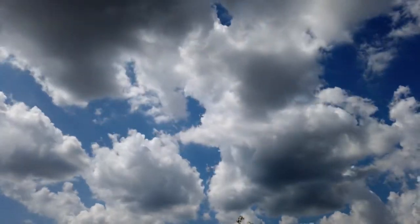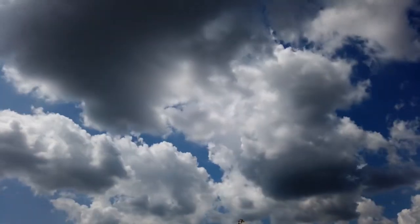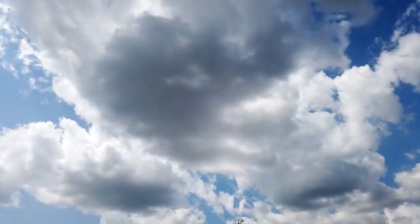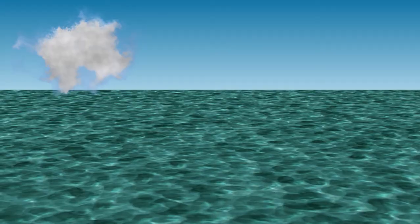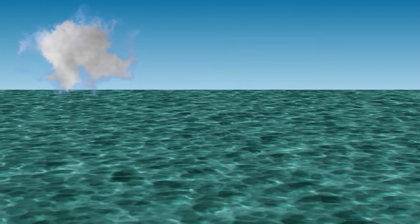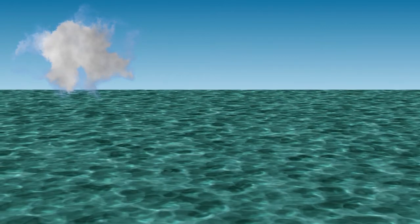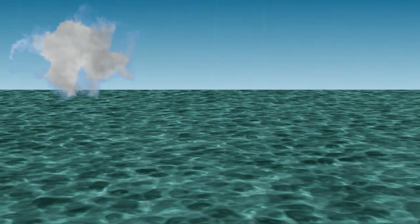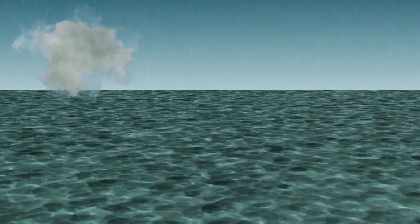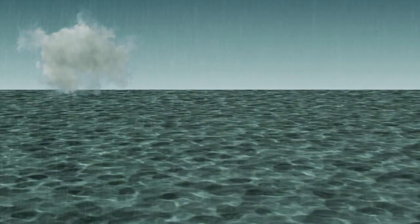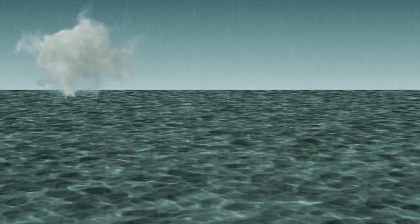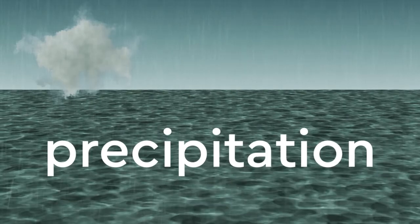Clouds transform into liquid water. Water droplets get bigger over time. When the cloud becomes too heavy, water falls as rain or snow. This is called precipitation.